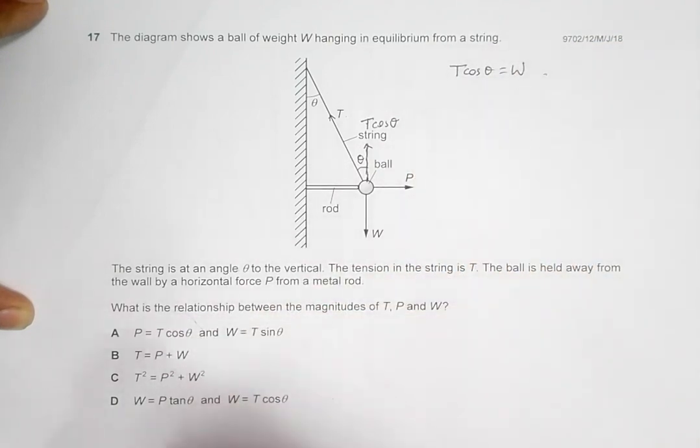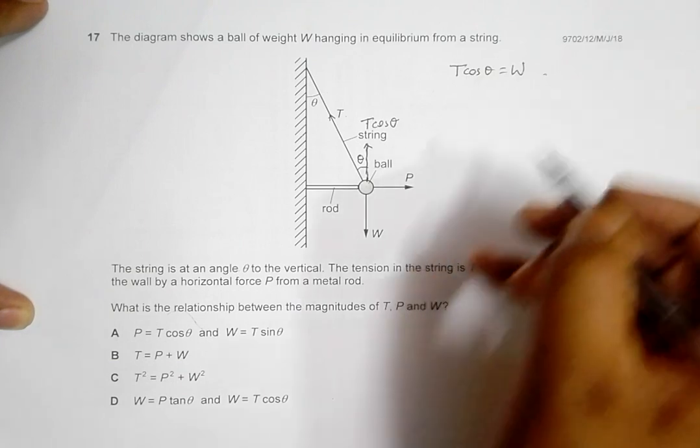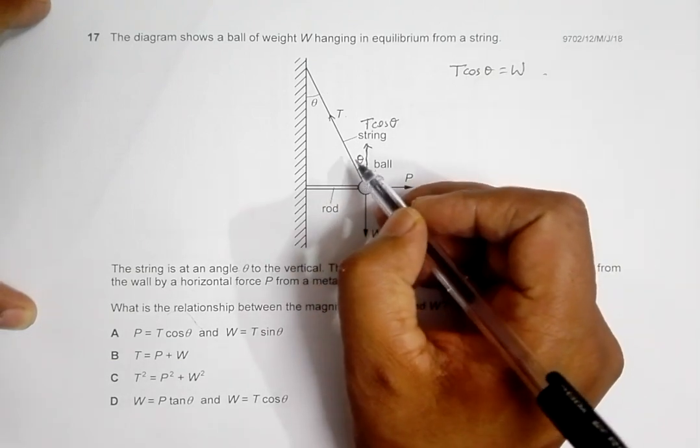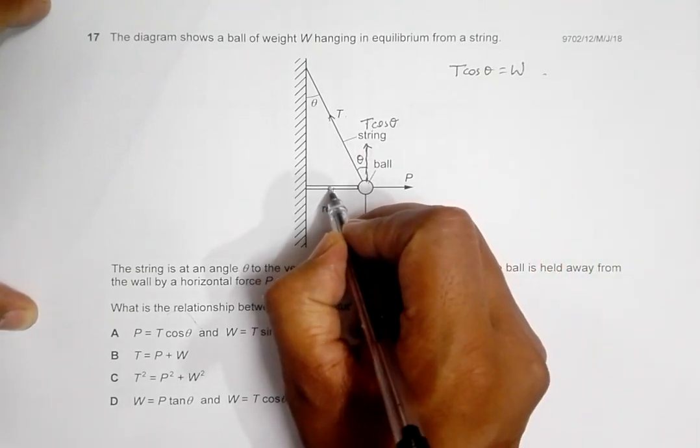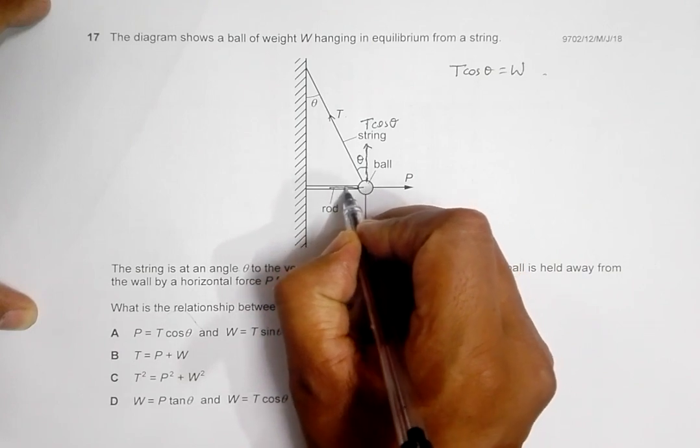If you go through here, choice D has this thing, W equals T cos theta. But we still have to solve for this thing. Let's see.